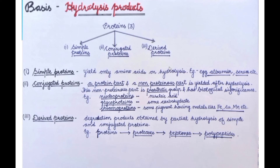The third type is derived proteins. These are degradation products. When we do protein hydrolysis — whether simple or conjugated protein hydrolysis — it may not be fully hydrolyzed. If it is partially hydrolyzed, we get intermediate products. These intermediate products, such as proteases or peptones, are called derived proteins, which are the intermediate products obtained during partial hydrolysis.